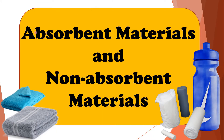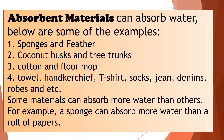Let's talk about absorbent materials and non-absorbent materials. When we say absorbent materials, it can absorb water. Below are some of the examples: sponges and feather, coconut husk and tree trunks, cotton and floor mop, towel, handkerchief, t-shirt, sacks, jeans, denims, rubs, and etc. Some materials can absorb more water than others. For example, a sponge can absorb more water than a roll of papers.